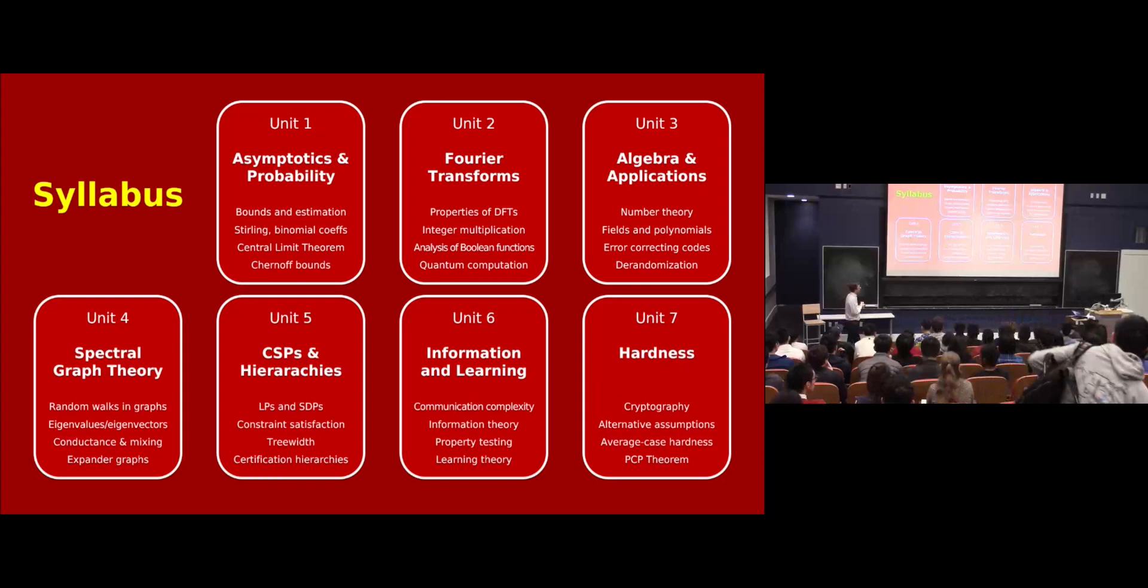Okay. So I wanted to flash up here a little bit of the syllabus. Roughly speaking, this is a bit tentative and maybe not exactly precise, but roughly speaking, the topics of the course kind of fit into seven units, each of which will have between three and five lectures. So this is the approximate syllabus for the remaining 28 lectures. So we'll talk about asymptotics and probability. We'll talk about Fourier transforms in some applications. We'll talk about some elementary algebra applications, spectral graph theory, constraint satisfaction programs, and linear programming and SDP hierarchies, information and learning theory, and some hardness, computational hardness. So these are the topics that you can look forward to. And as I said, there are many other topics I could have chosen, but unfortunately we only have so many weeks and so many lectures. This is what we'll hear about.